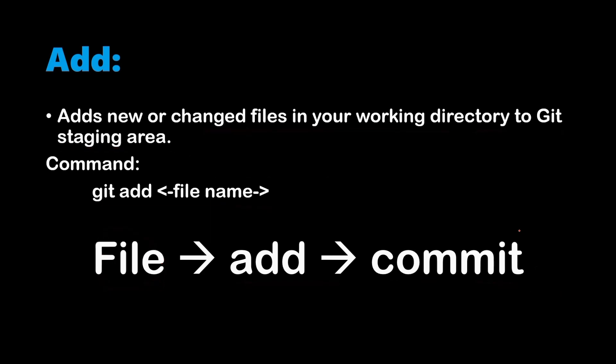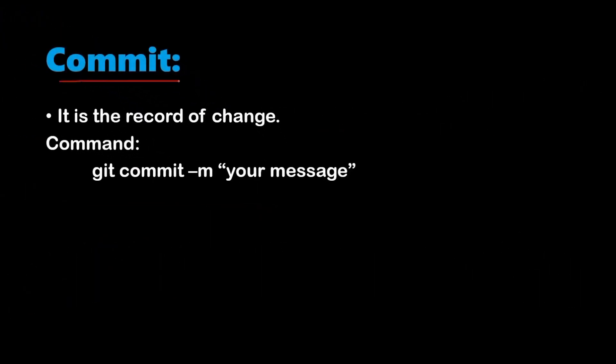The last thing we have to do is commit these staged changes. A commit is a record of the change you have made in your file or repository. I've already made a video on how to commit changes in a GitHub account, but here we'll see how to commit using git commands. The command is git commit -m followed by your message — any message you want to save so you can track what changed at that point in time.